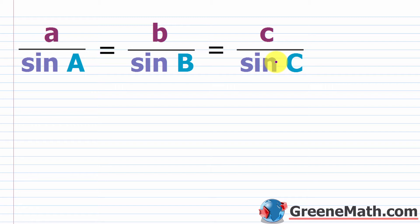Before getting started, I want to recap some things we're going to need for this lesson. Some of you might find this boring, so you can skip ahead to the examples, but I think you'll find it beneficial. First and foremost, let's revisit the law of sines: a over sine of A equals b over sine of B, which equals c over sine of C.